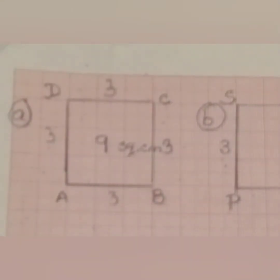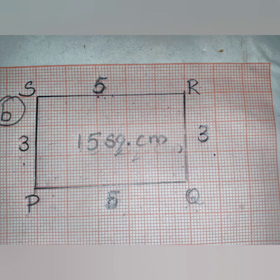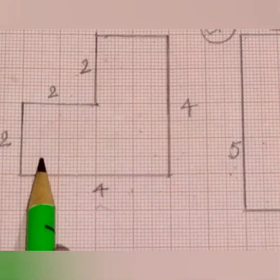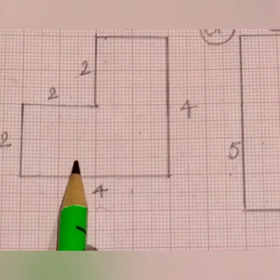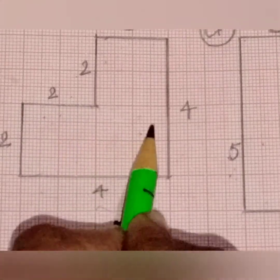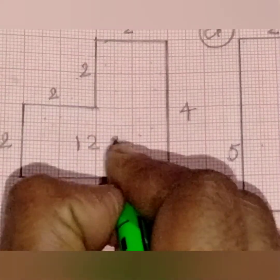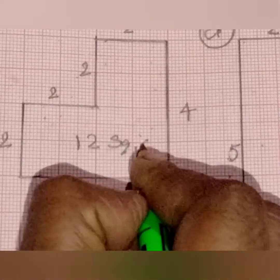We always denote area with square centimetres or square metres. Now, let us find the area occupied by this rectangle. After counting all the squares inside the rectangle shape, I got 15 small squares — so the area is 15 square centimetres. Now, let us count the next shape: 1, 2, 3, 4, 5, 6, 7, 8, 9, 10, 11, 12. So, the area is 12 square centimetres.